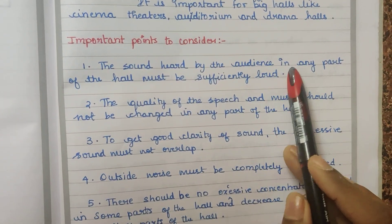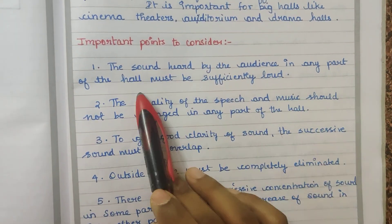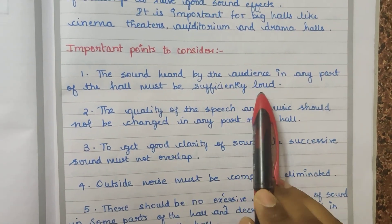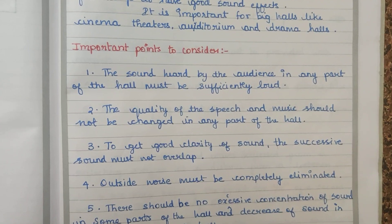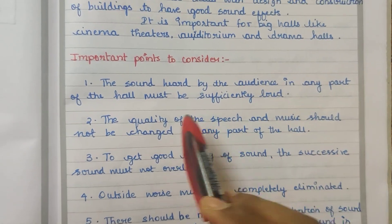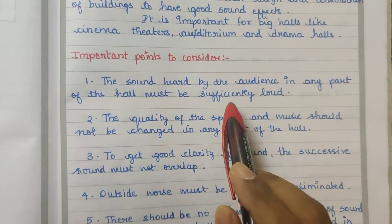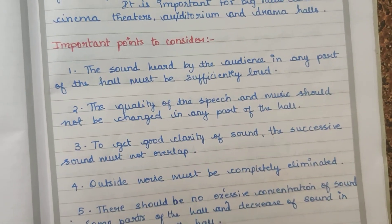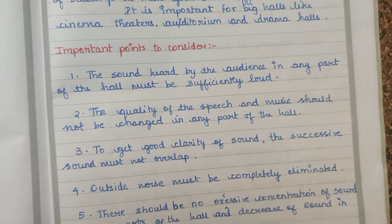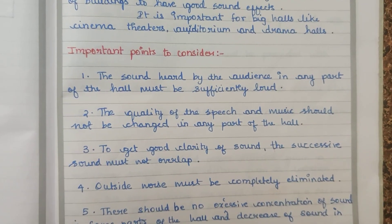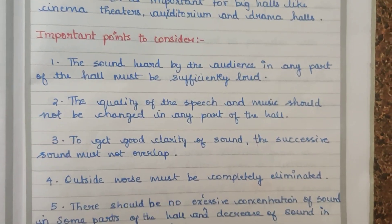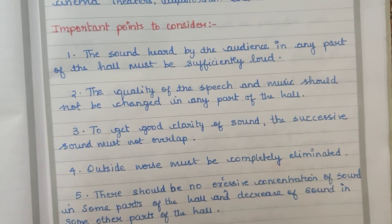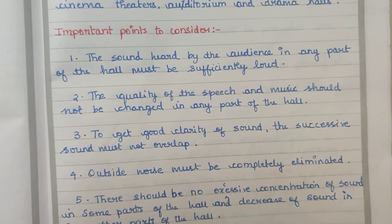The sound heard by the audience in any part of the hall must be sufficiently loud. For example, in a cinema theatre, everyone in the hall should be able to hear the sound clearly.